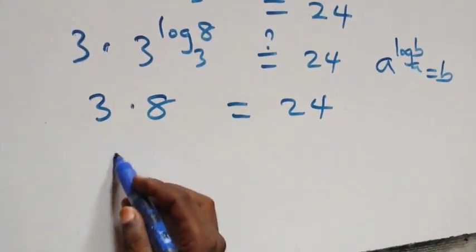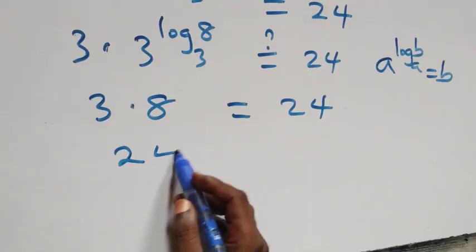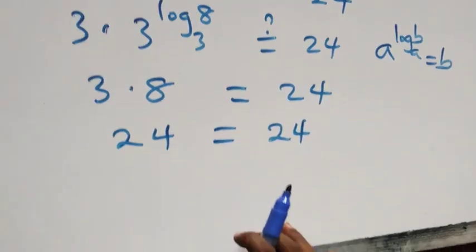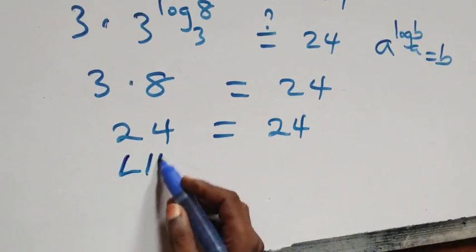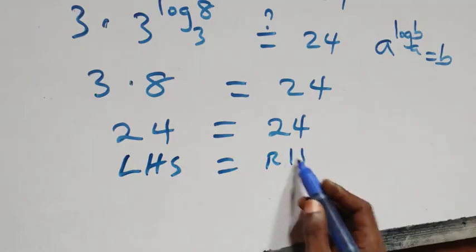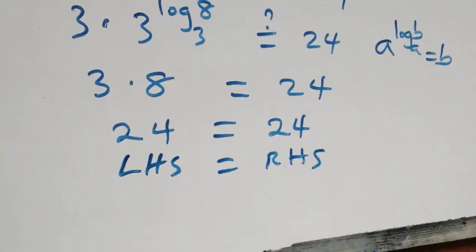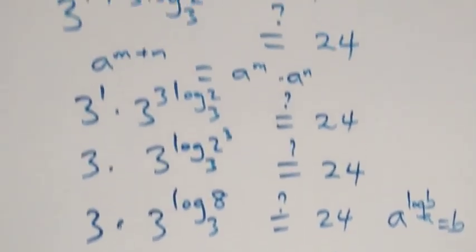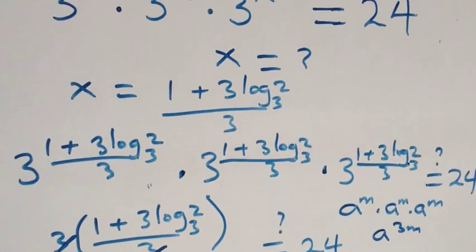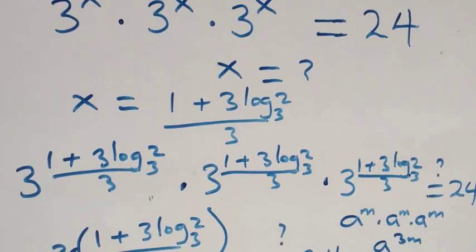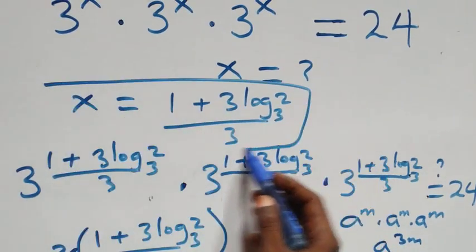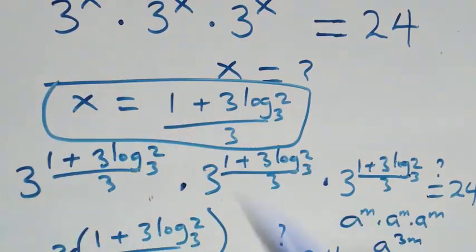And of course 3 times 8 is 24 — which is equal to 24 on the right hand side. Now we have the left hand side equals the right hand side. Hence we conclude that x equals to (1 plus 3 log₃2) all over 3, satisfying the given problem.